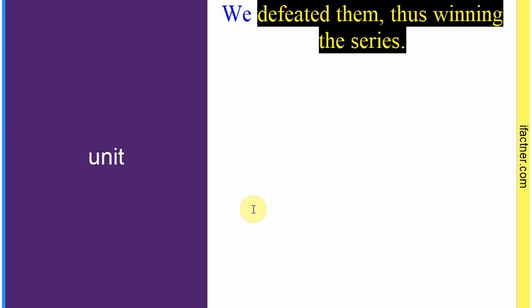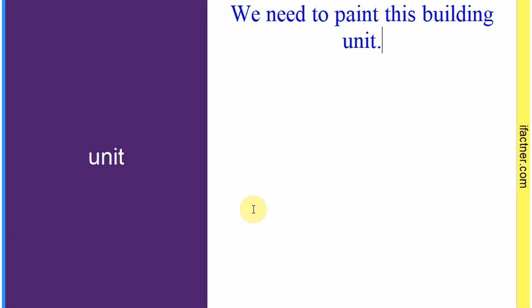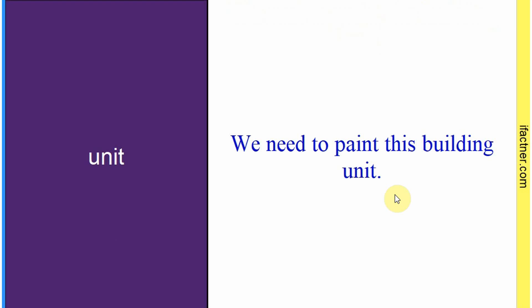Word hai: 'unit'. 'Unit' ke bhi different meanings ho sakte hain. Sentence: 'We need to paint this building unit.' Jaise koi factory ho us mein bahot zyada buildings hon, toh har ek building ko hum 'unit' kahenge. Toh 'unit' hota hai ek hissa — mathematics mein bhi units hote hain. Sentence banaaya: 'We need to paint this building unit.'